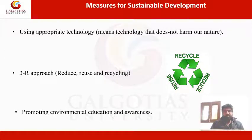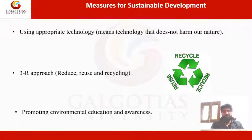The measures for sustainable development are: number one, using appropriate technology — technology that doesn't harm our nature. The second one is the 3R approach, also known as Reduce, Reuse, and Recycling. Reduce means we have to reduce the excess use of natural resources; reuse means we have to use them again and again.